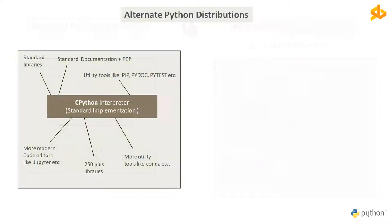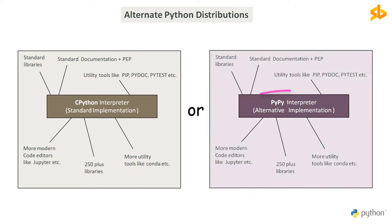Please note that some distributions, although very few, might use alternative Python implementations like PyPy or IronPython as the core component instead of standard CPython and build around them. You will have to bear this in mind when choosing any non-standard alternative distribution of Python.